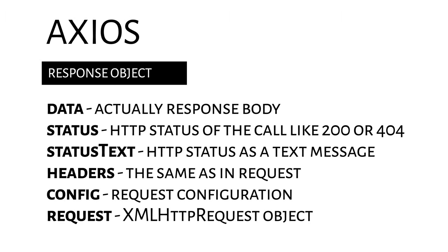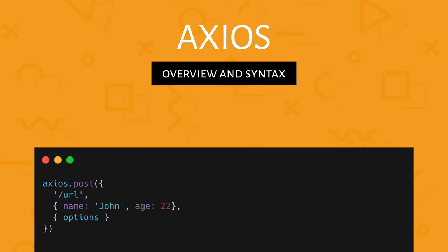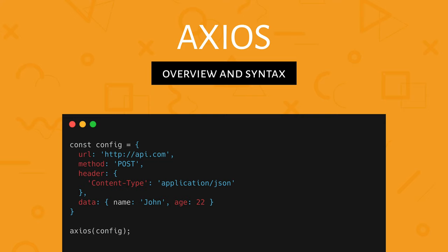As a response, Axios returns a promise that resolves with the response object or an error object. The response object contains: data (the actual response body), status (like 200 or 404), statusText (like 'OK' for 200), headers, config, and request. You can also create a config object as a variable and pass it to Axios — as you can see now on the screen with both a POST example using .post() and a config-based approach.